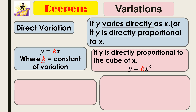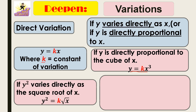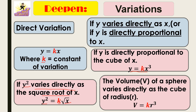If y is directly proportional to the cube of x, you just put k as a constant in the equation. If y squared varies directly as the square root of x, you write k and then y squared equals k times the square root of x. The volume of a sphere, represented as v with r for radius, varies directly, so it is just v equals k times r cubed.